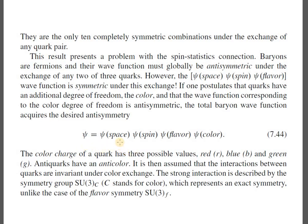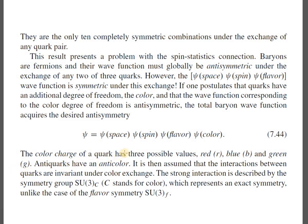The total baryonic wave function is the product of four separate parts: space, spin, flavor, and color. The color charge of a quark has three possible values: red, blue, and green. Similarly, anti-quarks have anti-color: anti-red, anti-blue, and anti-green, denoted by r-bar, b-bar, and g-bar. Very importantly, compared to the SU(3) flavor symmetry for the UDS quarks, the SU(3) color symmetry is exact.